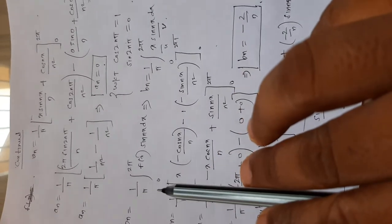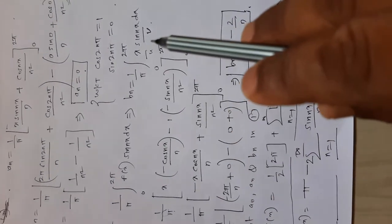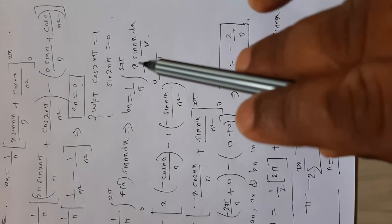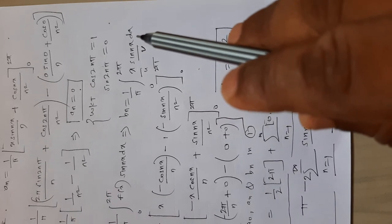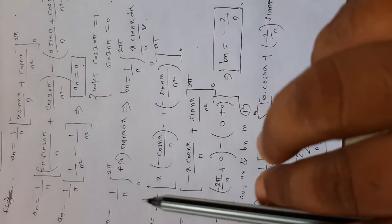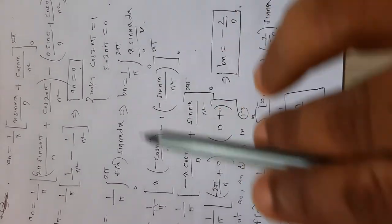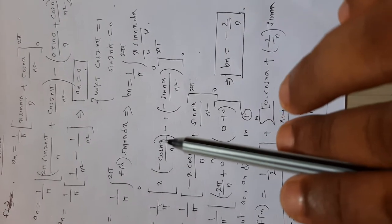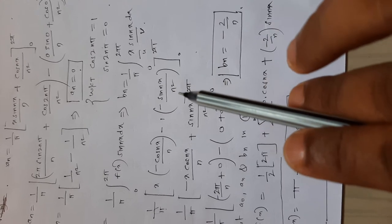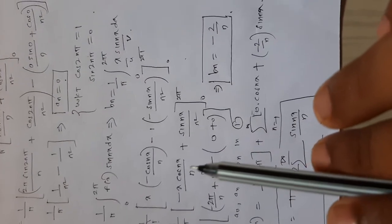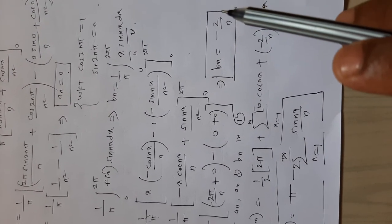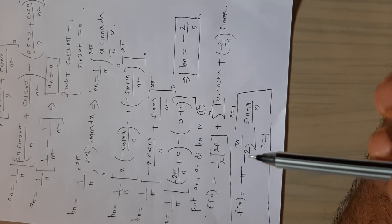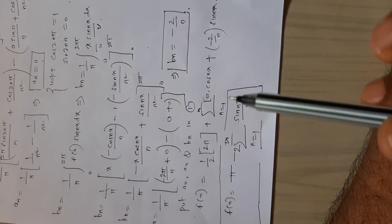Similarly we calculate bn. We write the formula for bn and put the value of f(x). Again we have a product of two functions: x and sin(nx), so we apply integration by parts. Writing 1/π as is, first term x, integration of sin(nx) is -cos(nx)/n; minus the derivative of x which is 1, times the integration of -cos(nx)/n which is -sin(nx)/n². Simplifying and putting the upper and lower limits, we get bn = -2/n. Putting all values in equation number 1, we get f(x) = π - 2·Σ(n=1 to ∞) sin(nx)/n.